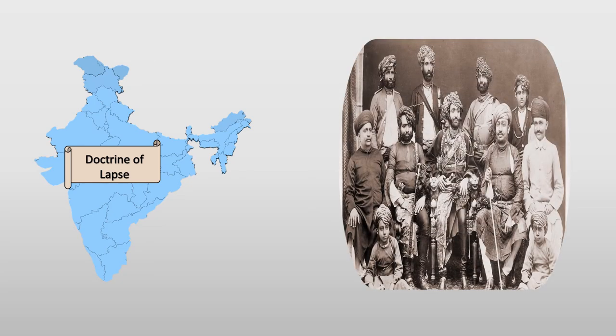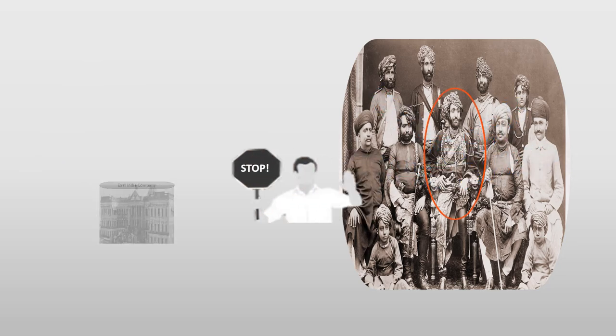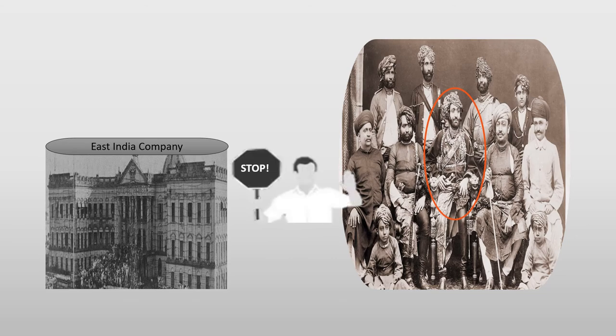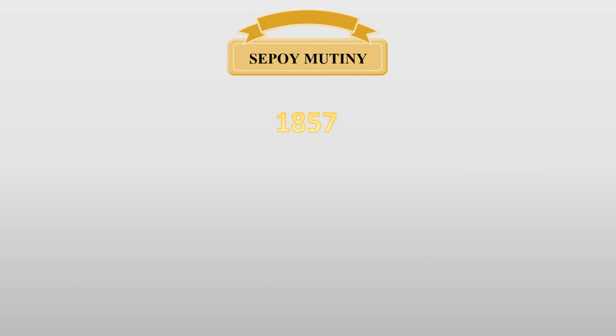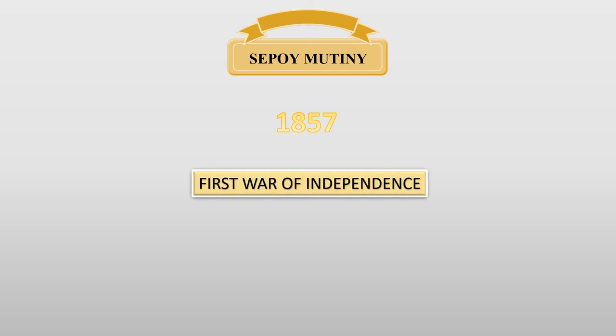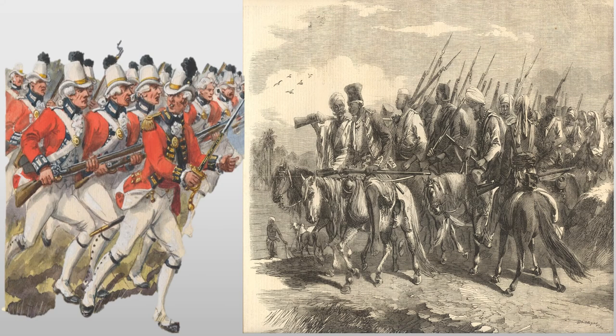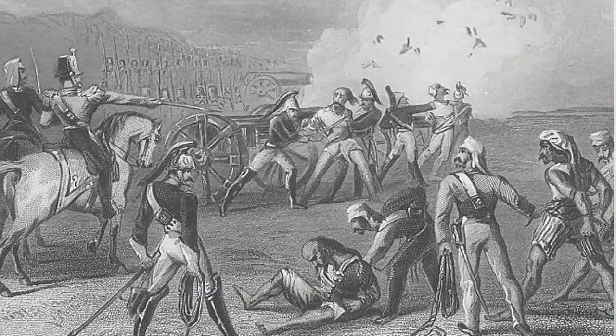Once this policy was severely applied, the princely families, including ordinary people, showed true love and loyalty to their kings, which made them oppose the Company strongly. This frightened the British, which resulted in the Sepoy Mutiny in 1857, also called the First War of Independence, where Indians turned against the British for punishing the people cruelly.